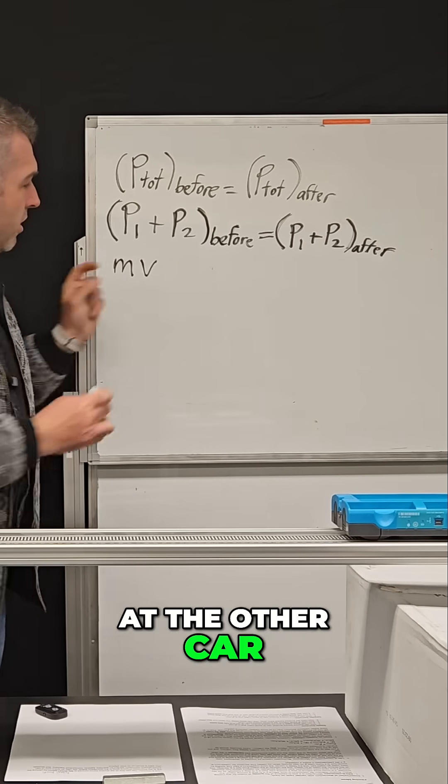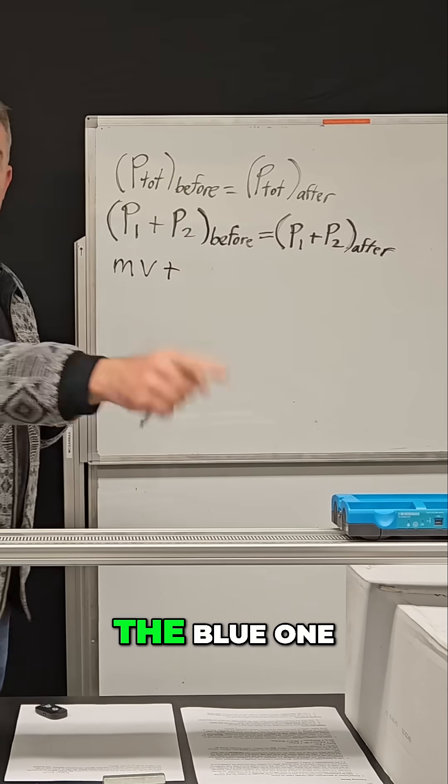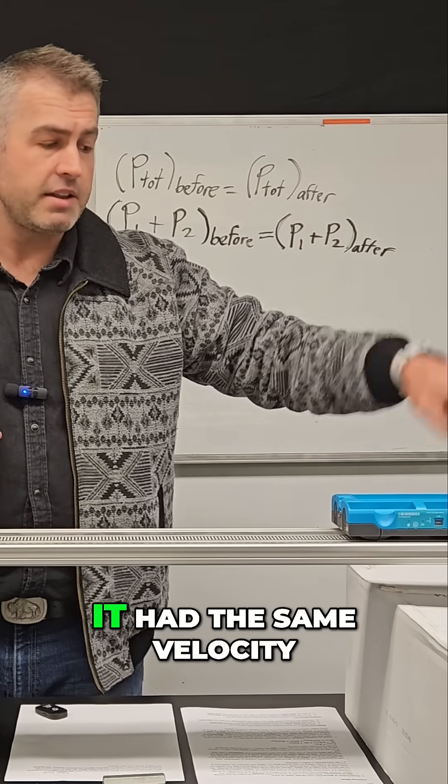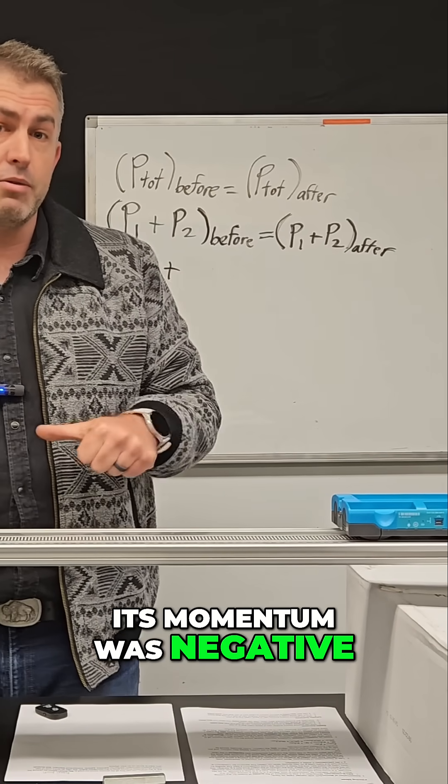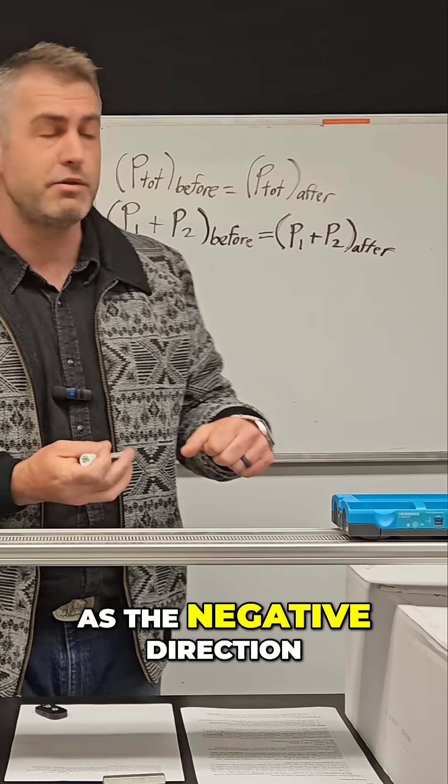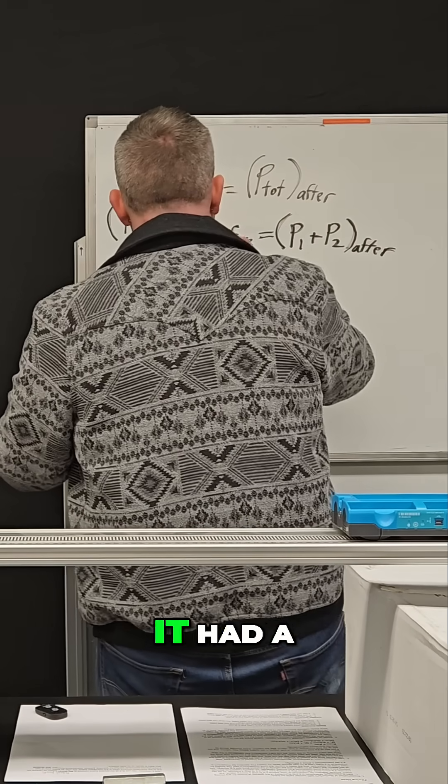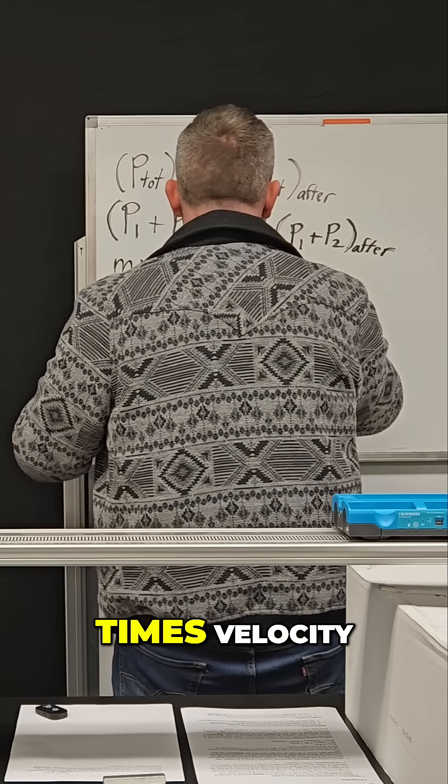And then if we look at the other car, which is the blue one, it had the same mass, it had the same velocity, but it was moving in the opposite direction. So that means its momentum was negative. We're gonna define to the left as the negative direction. So we would say it had a negative mass times velocity.